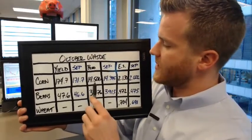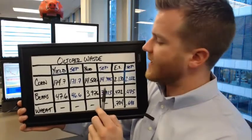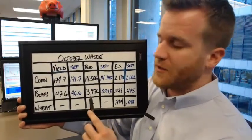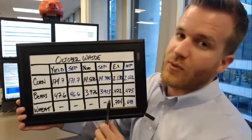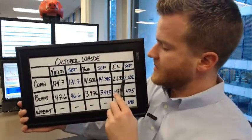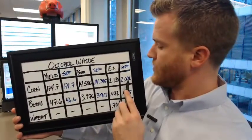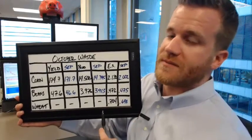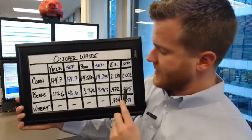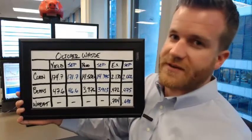Production is expected to increase for corn, coming in at 14.506 billion bushels versus 14.395 billion in September. Beans are expected to come in at 472 million bushels, which is actually slightly lower than the WASDE report of 475 million bushels.